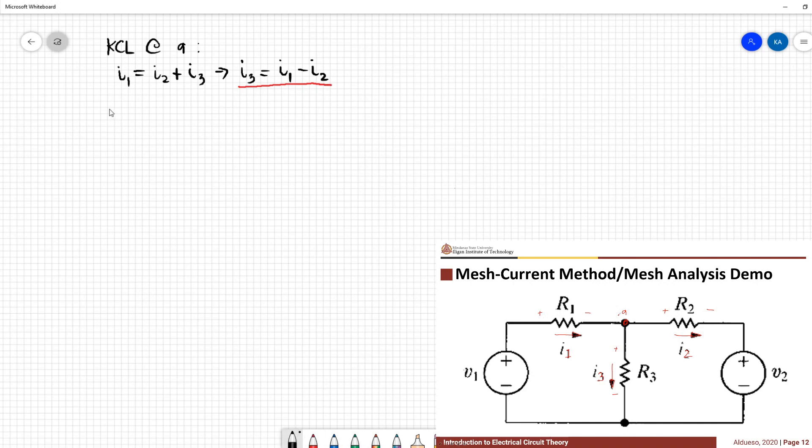Applying KVL at the left loop, we have negative V1 plus R1 times i1 plus R3 times i3.